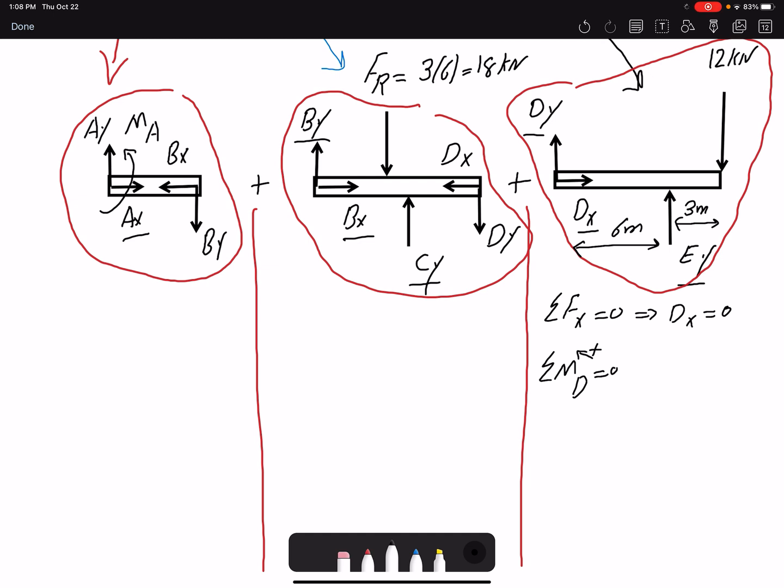The force EY is creating a positive moment. And the moment arm is six. So EY, moment arm six, minus the 12 kN is creating a negative moment, clockwise moment, zero. So I will get the value for EY to be 18 kN.